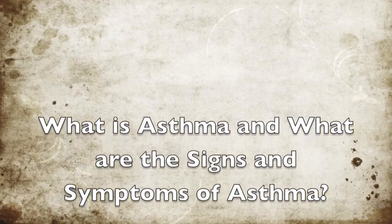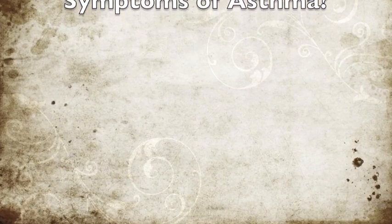In order for us to better understand what we're going to be talking about today, we must first understand: what is asthma? Asthma is a syndrome characterized by obstruction of airflow in and out of the lungs. This obstruction is caused by inflammation or swelling of the airway tubes, in addition to increased production of mucus in the airway, which is triggered by an immune response due to an irritant or allergen.